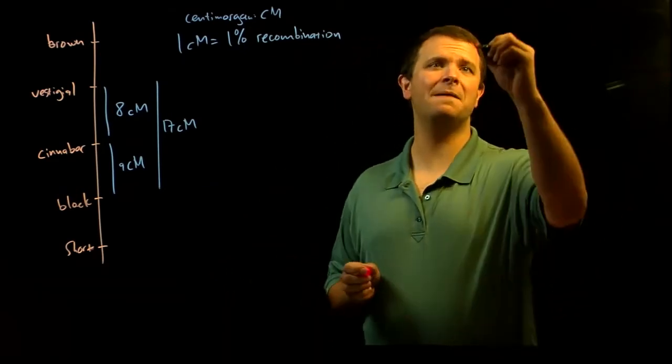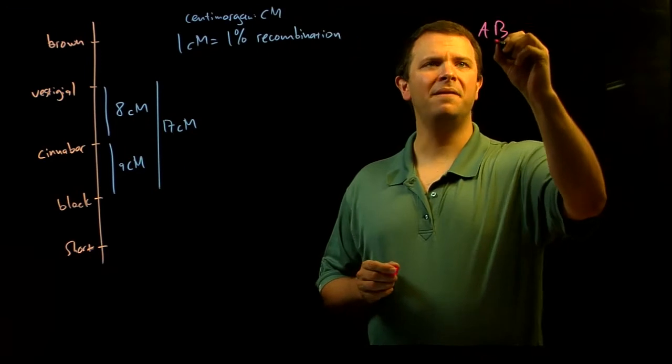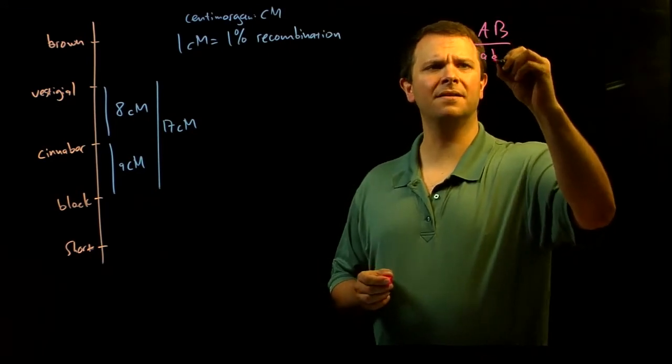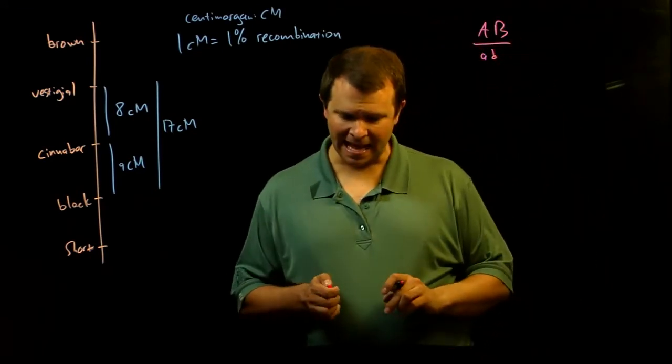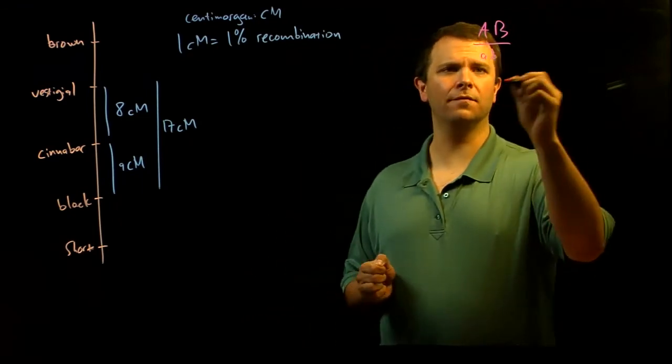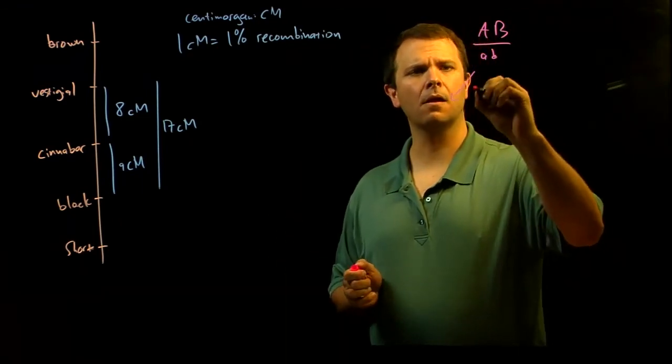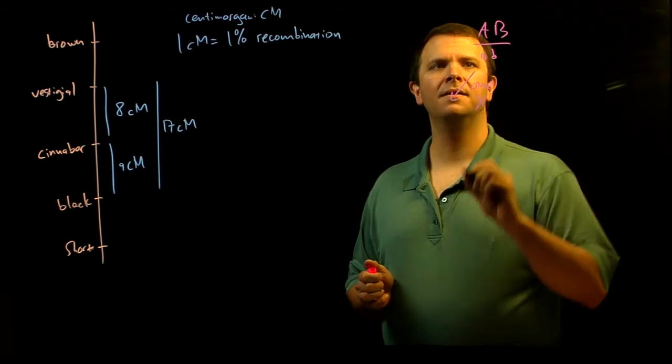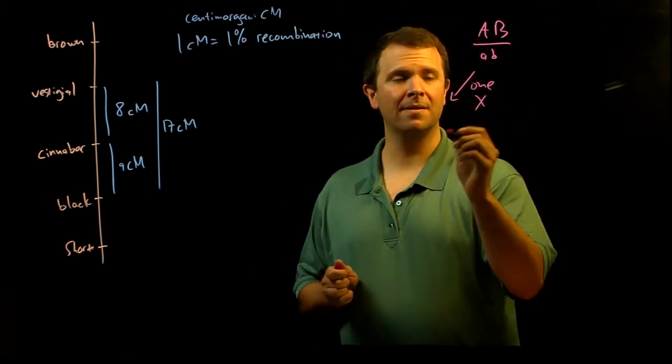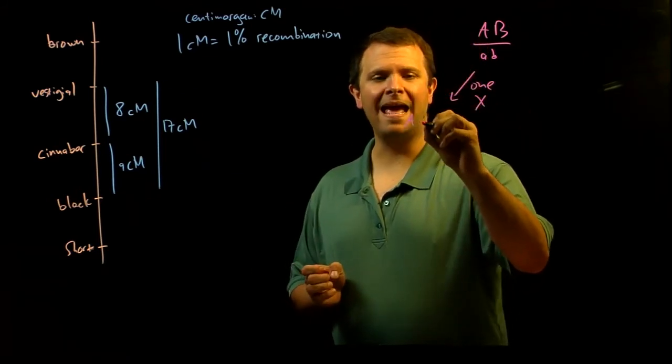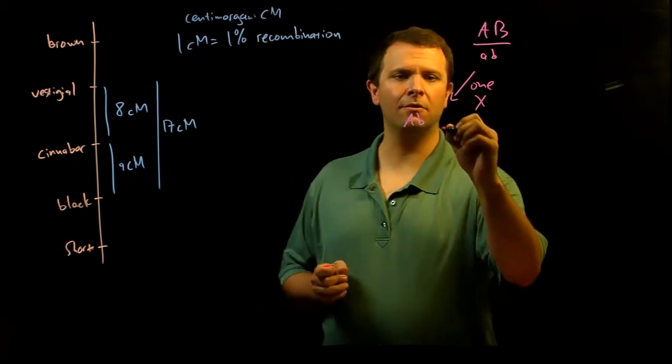And so if a parent genotype is big A, big B over little a, little b, and one crossing over leads to big A, little b chromatid.